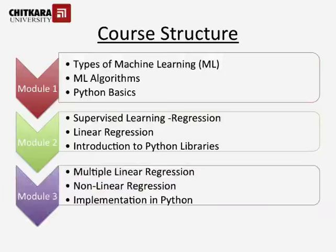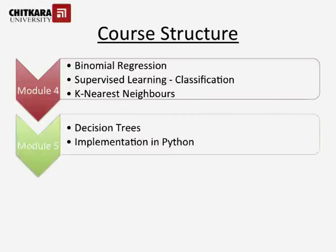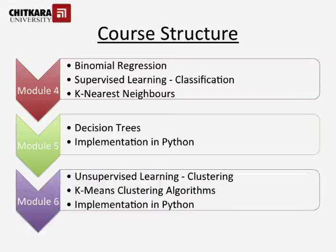In the third module, we will be working on variants of simple regression — non-linear and multiple. In the fourth module, we will be understanding binomial regression and another approach to supervised learning, that is classification, and k-nearest neighbors classification algorithm. In the fifth module, we will work on decision tree algorithms both for regression and for classification. In the sixth module, we will understand another type of ML — unsupervised learning — clustering algorithm for this approach and k-means clustering algorithm.